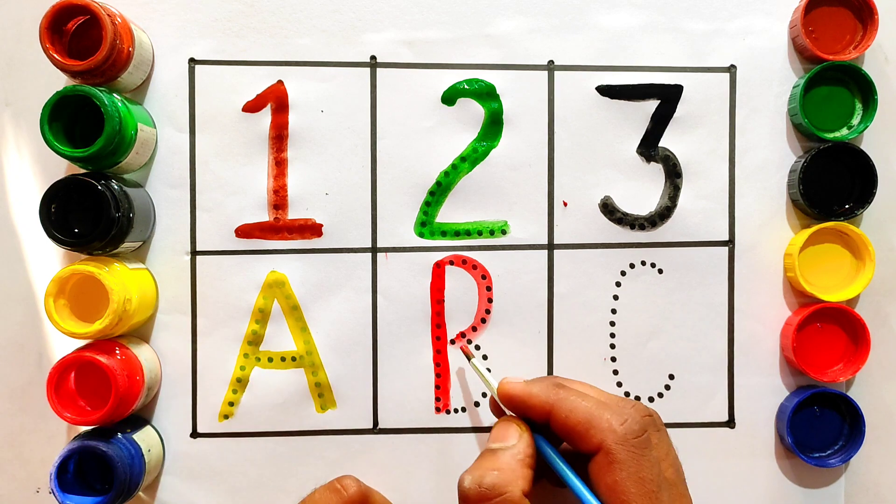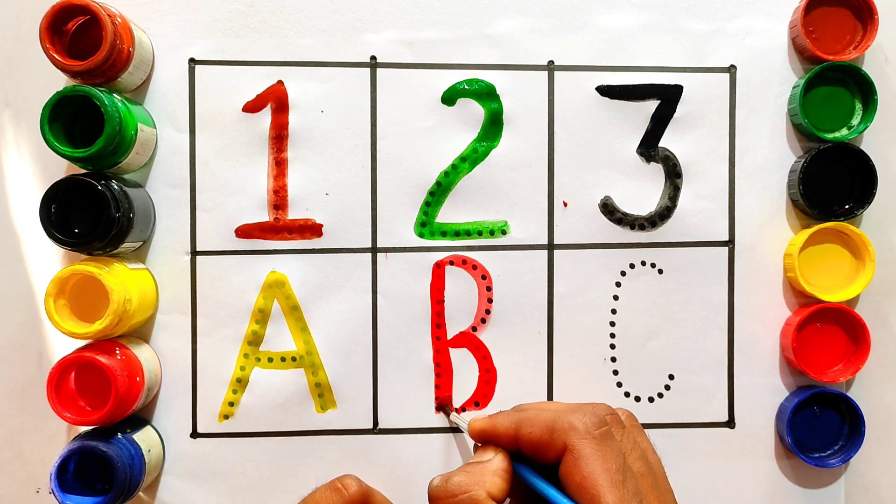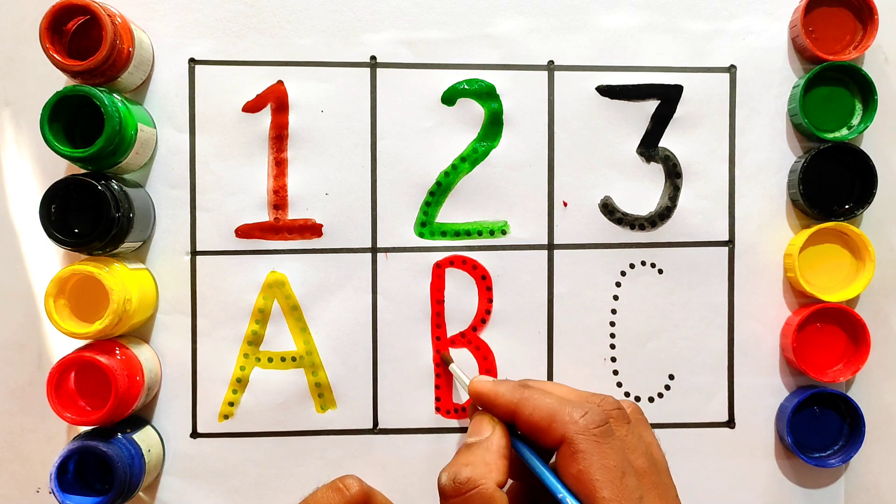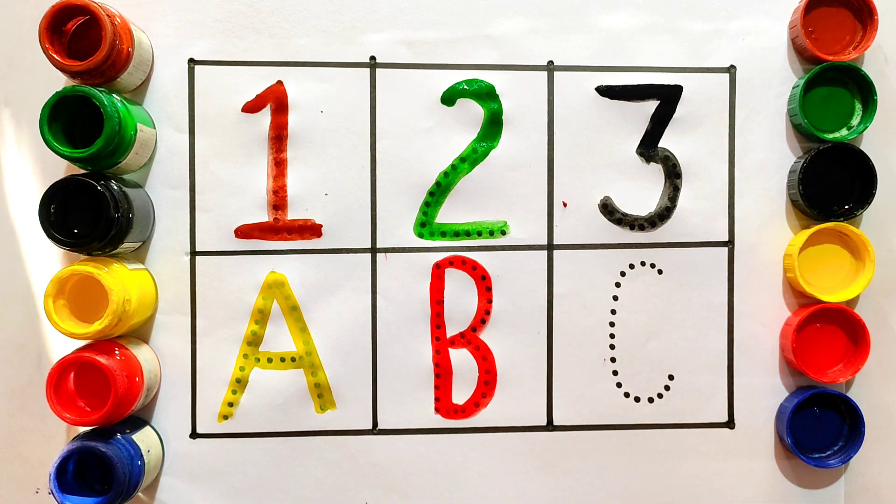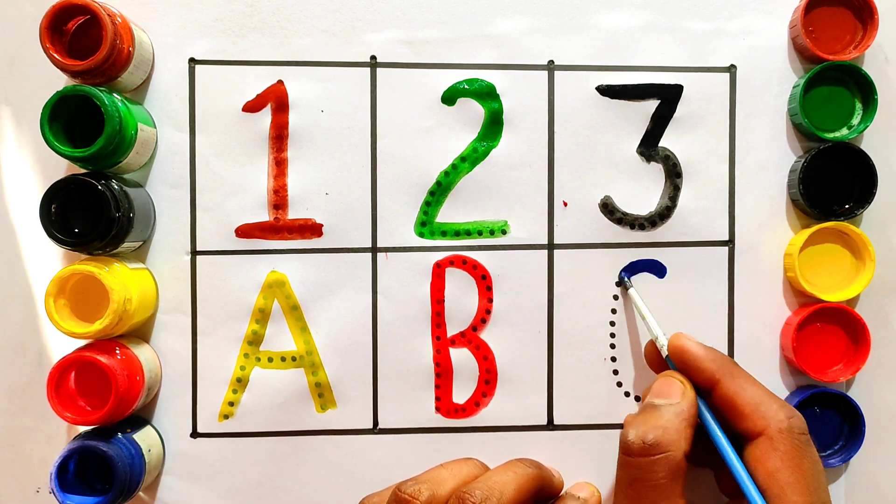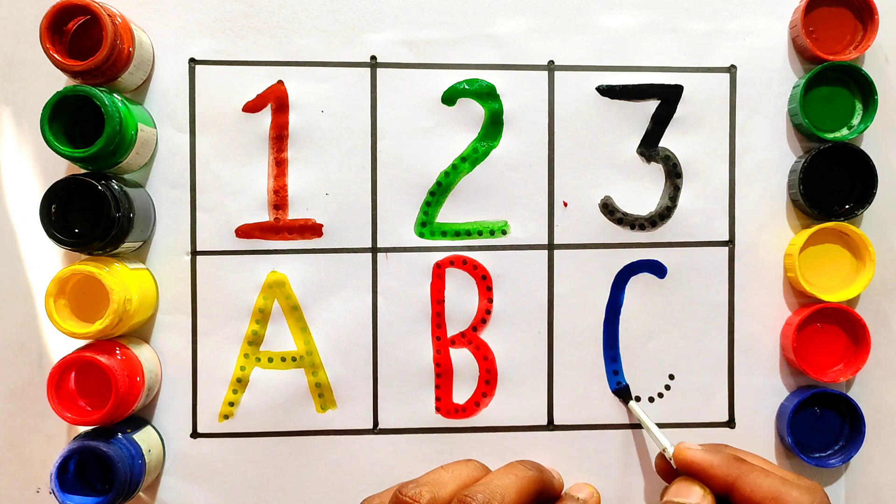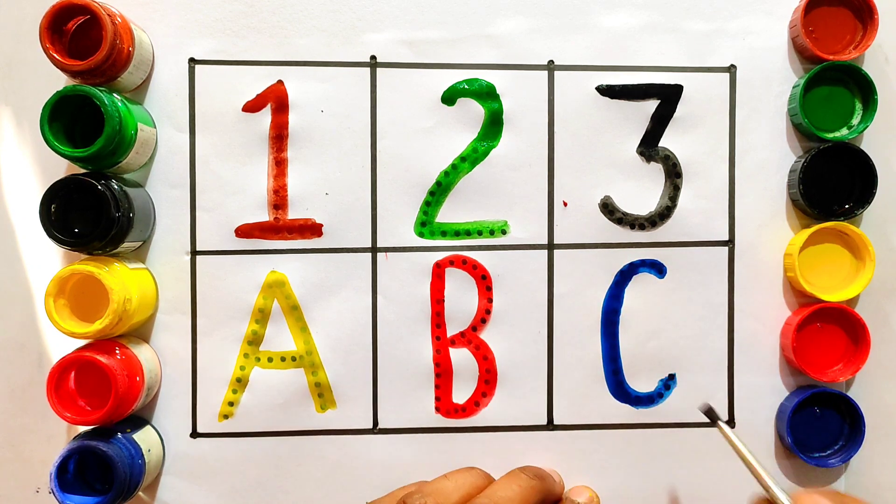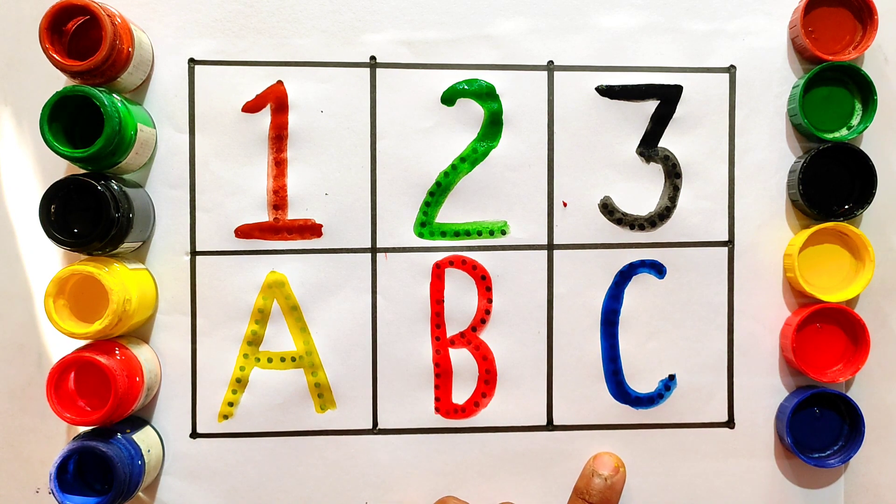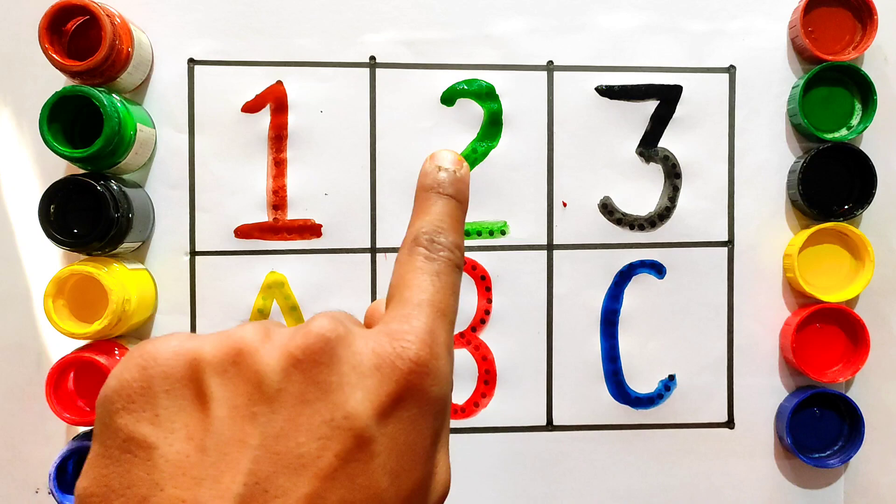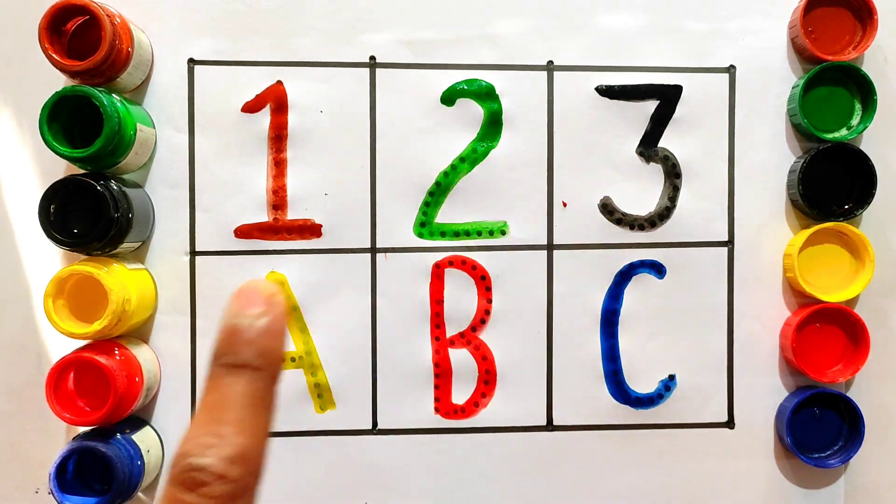For ball, B-A-double L, ball. C, C for cat, C-A-T, cat. One, two, three, A, B, C.